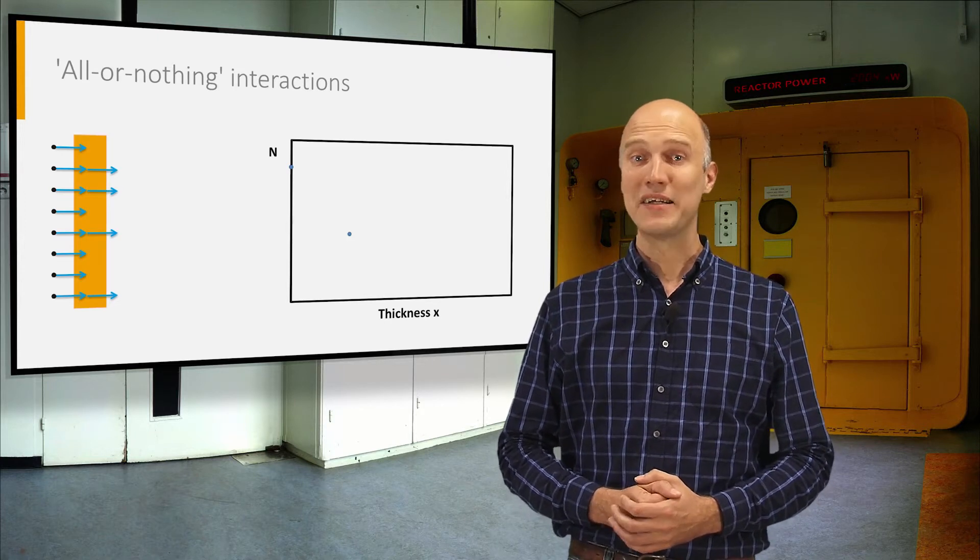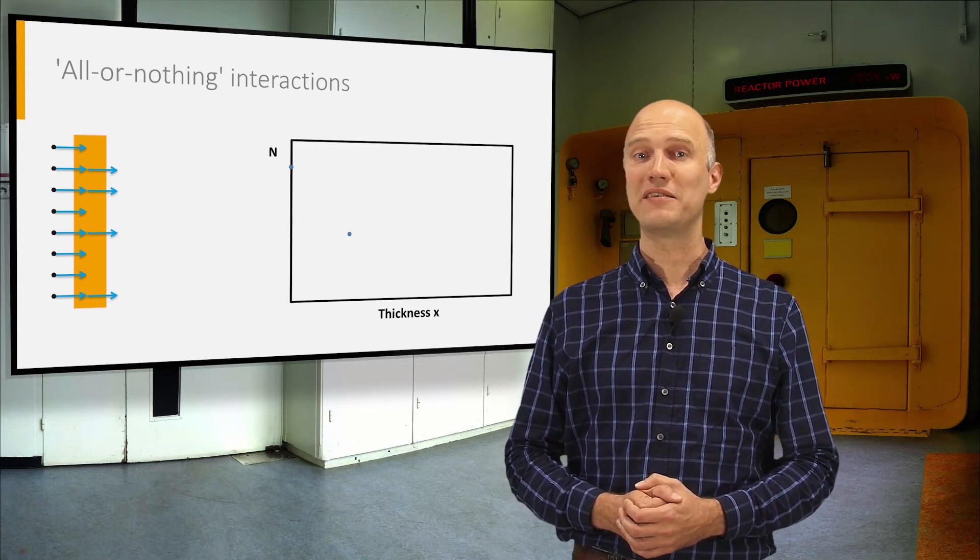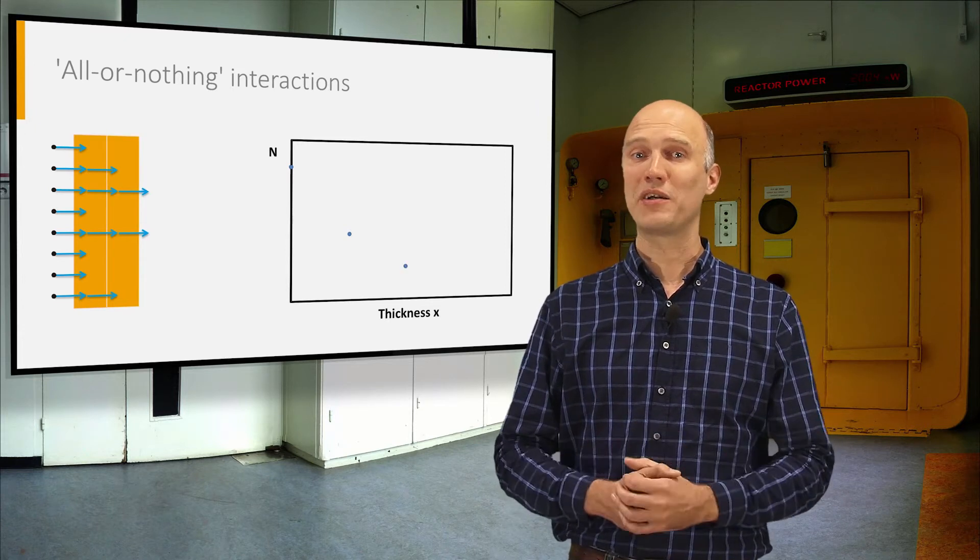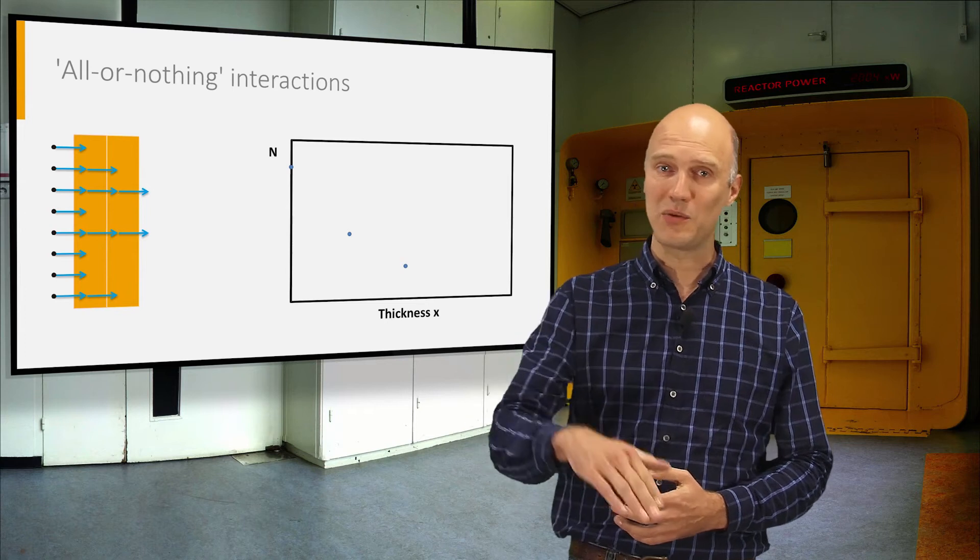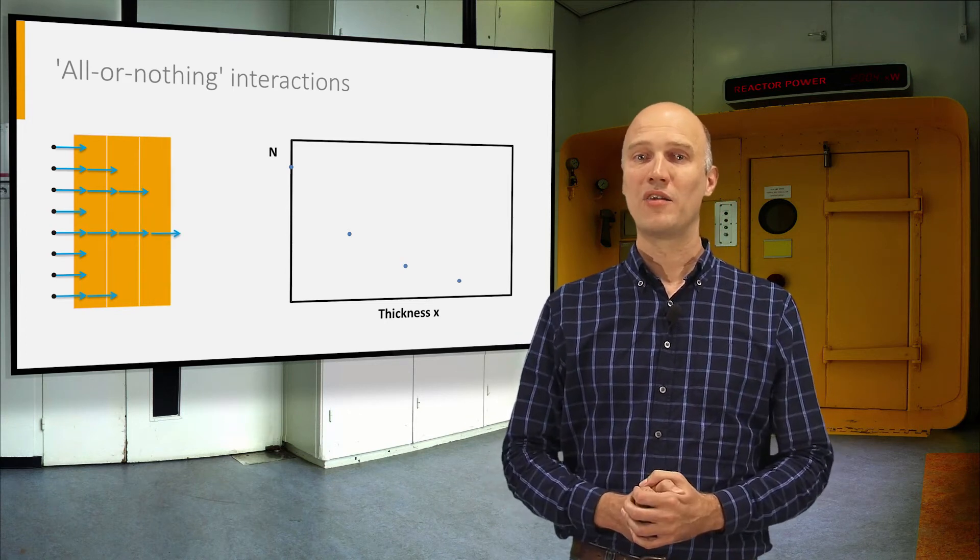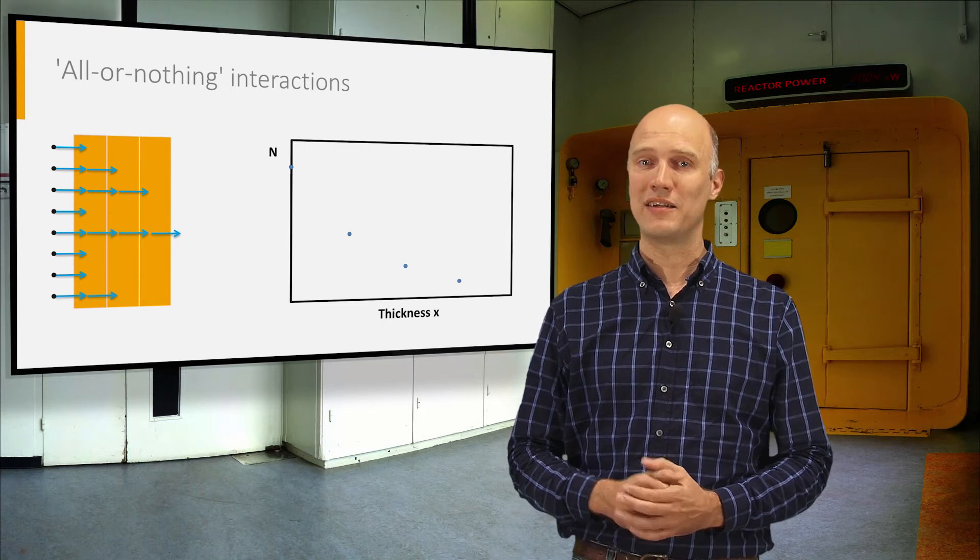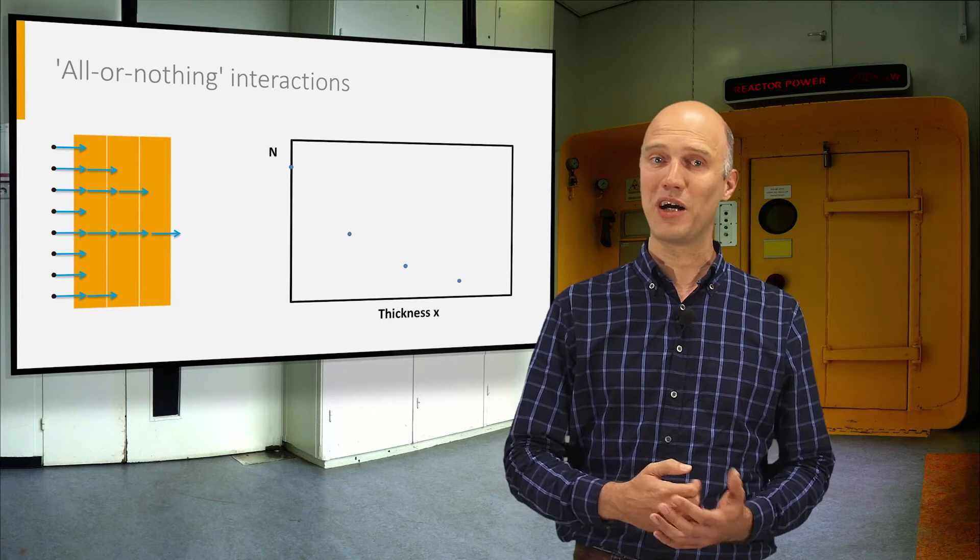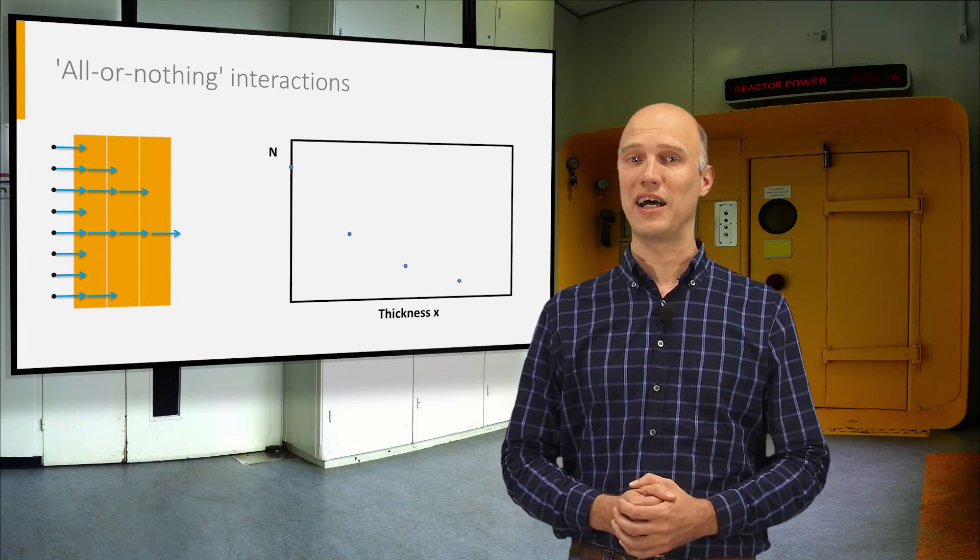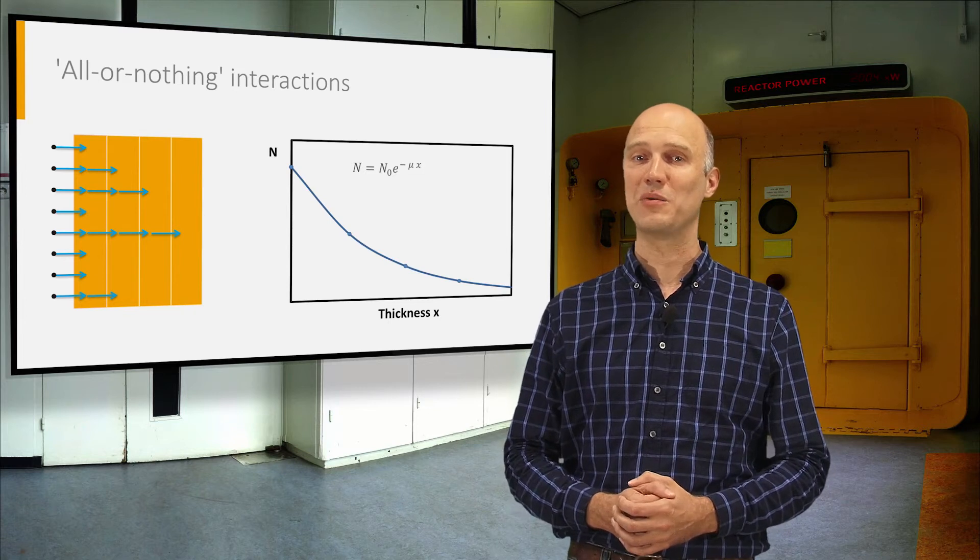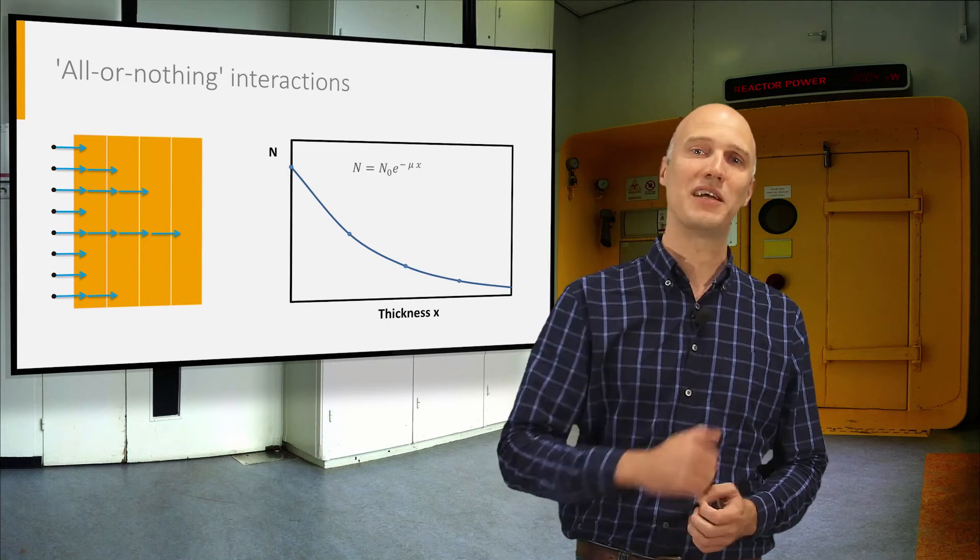However, some of the particles are eliminated in all-or-nothing interactions, so the number of particles passing through will decrease when the thickness of the slab increases. The number of particles that interact in a slice of material is proportional to the number of incident particles and to the thickness of the slice. Therefore, the number of transmitted particles will decrease exponentially with the thickness of the material.